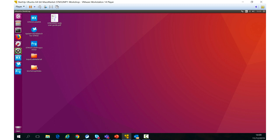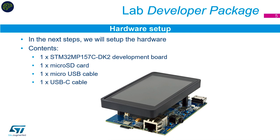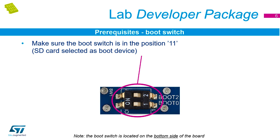Once you've copied those files across, we need to set up the hardware. Hopefully you've already done this from the getting started lab, but you will need your MP157C-DK2 development board with its micro SD card connected, a micro USB cable to connect the ST-Link, and a USB Type-C cable to power the board. If you haven't done the first lab, check that the two switches on the bottom side of the board are in the ON position so you'll boot from the SD card.